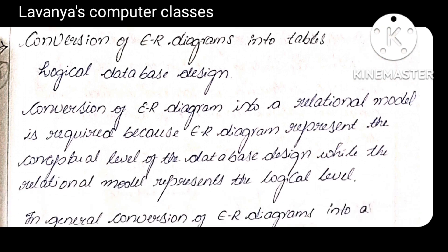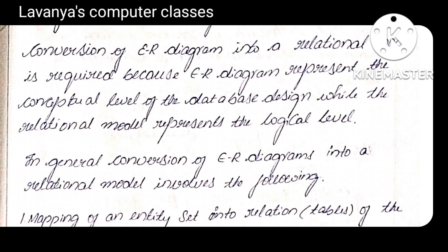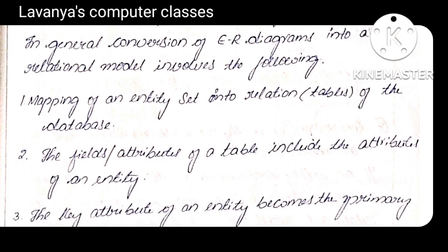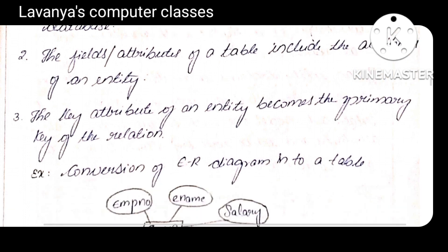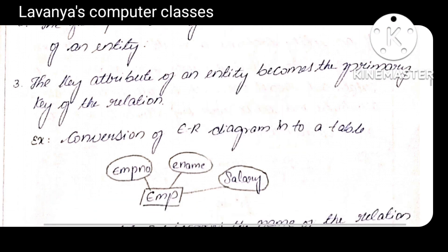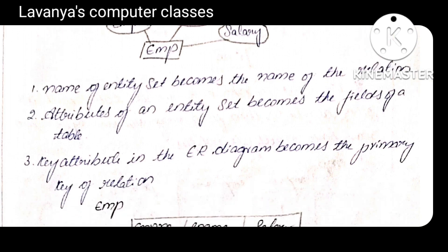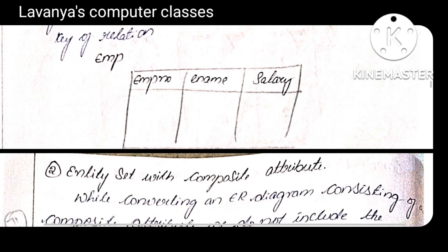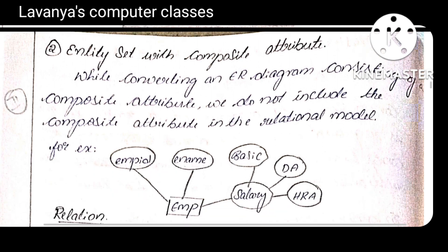Next one is conversion of ER diagrams into tables. ER diagram means Entity Relationship diagrams — how those ER diagrams are converted into relational tables. First: ER diagram with a strong entity set. Mapping an entity set to a relation in the database — the attributes of the entity become the fields of the table. The key attribute of the entity becomes the primary key of the relation. Example: employee ER diagram with attributes employee_number, employee_name, salary — employee_number is the primary key. The name of the ER diagram becomes the table name, attributes become fields, and the primary key maps to the primary key.